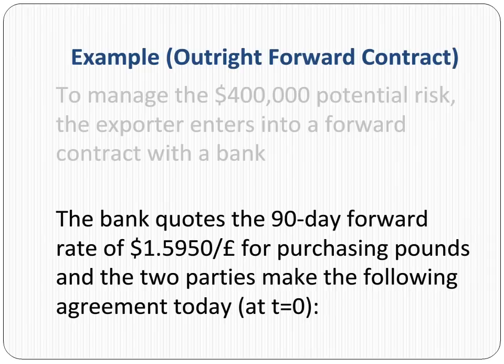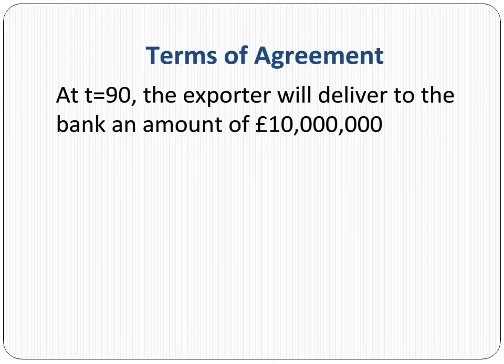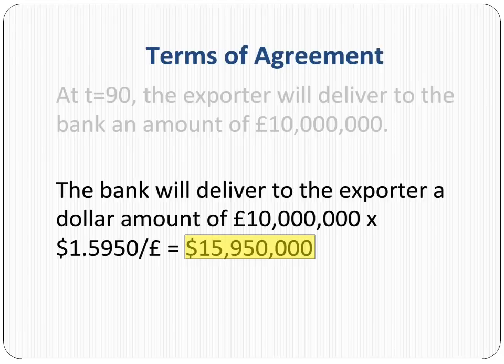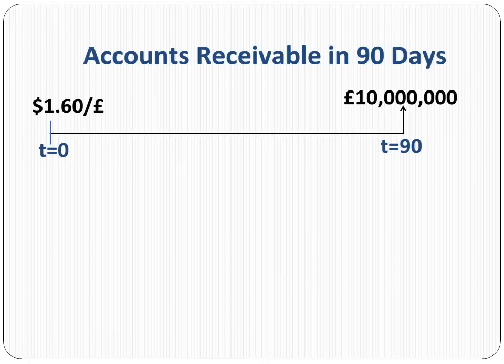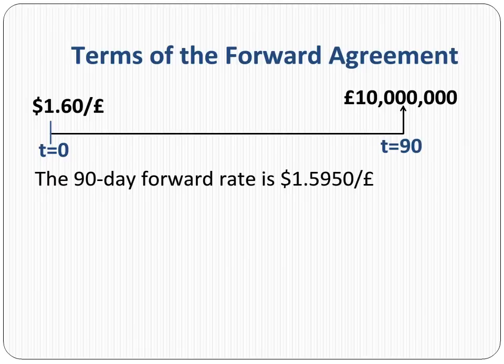The two parties make the following agreement today. At T equals 90, the exporter will deliver to the bank an amount of 10 million pounds, and the bank will deliver to the exporter a dollar amount of $15,950,000. Here is a timeline to visualize the cash flows. The current spot rate is $1.60 and the expected receivable amount in 90 days is 10 million pounds. The 90-day forward rate at T equals 0 is $1.5950 per pound.